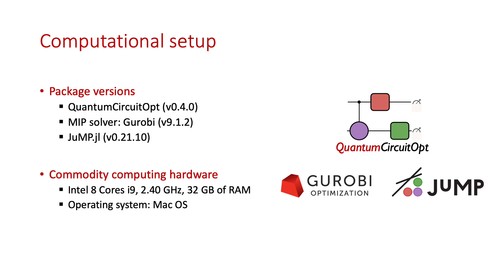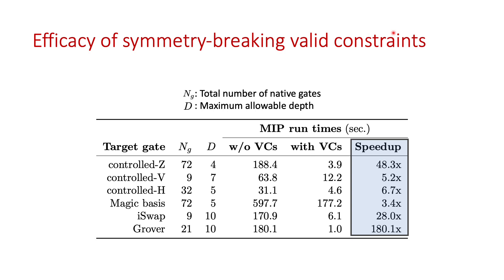Here is the computational setup for the QCOpt package for all subsequent results. Using Gurobi as the underlying MIP solver seems to perform best. We present the efficacy of symmetry breaking valid constraints, which the package derives automatically depending on the native gate set and target gate. For various target gates decomposed in two qubits, the results show total runtimes without valid constraints versus runtimes with the additional valid constraints added by the package. There is a tremendous speedup — in particular, for the Grover diffusion operator, a speedup of up to 180 times was achieved.